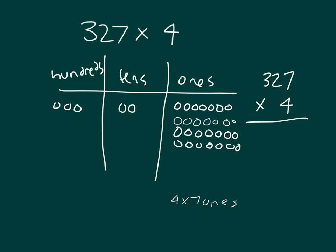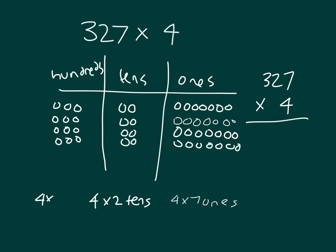We will do the same type of thing within the tens place, except we only have two tens there. So that's four times two tens — we're multiplying by four, so let's make some more tens there. And then finally in the hundreds place, we have four times three hundreds. What do we do with all those partial products? We add them.